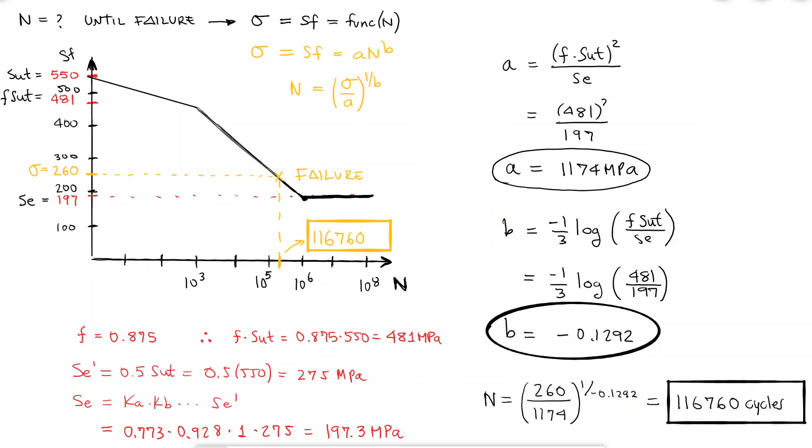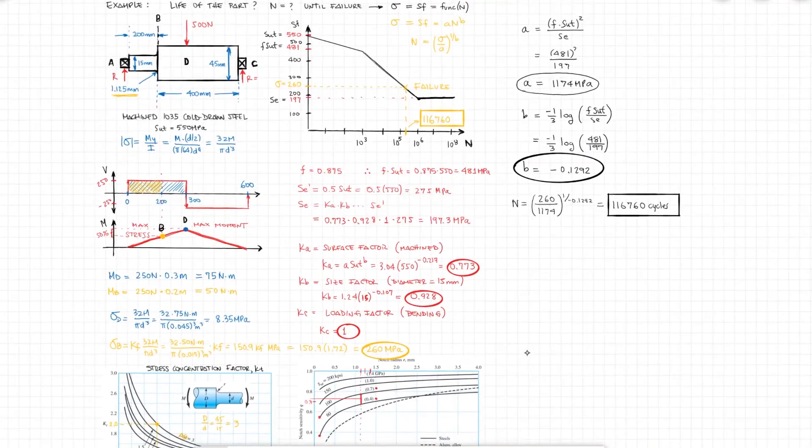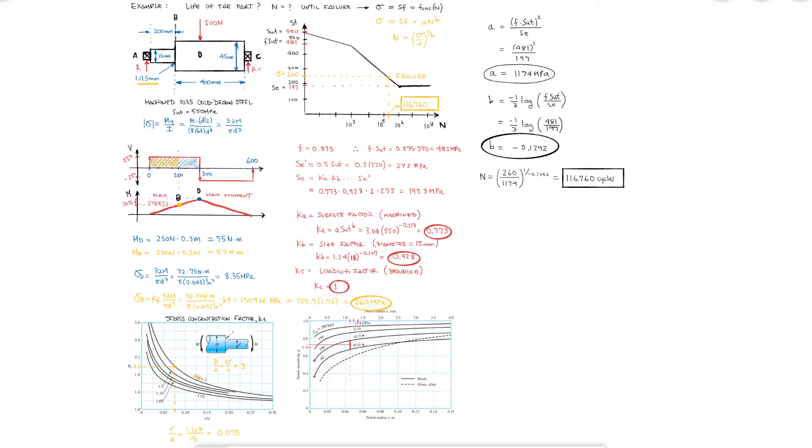If you'd like to check out some other examples where we put together everything we've learned so far about fatigue, make sure to check out the links in the description below. So far, we've looked at completely reversed stresses, which means that the mean stress is zero and the alternating stress goes from a negative to a positive value. In the next video, we'll look at the fluctuating stress diagrams, which will allow us to calculate a factor of safety for any fluctuating stress that is not centered at zero. Thanks for watching.